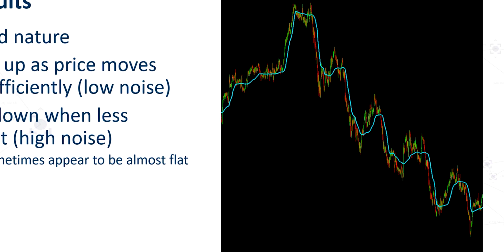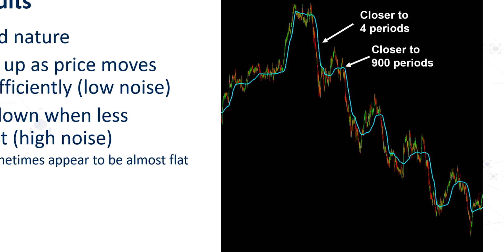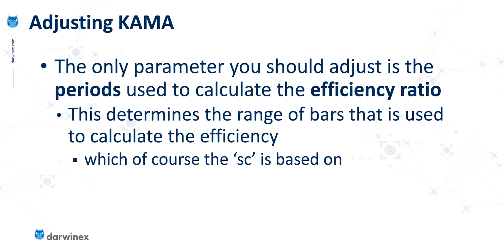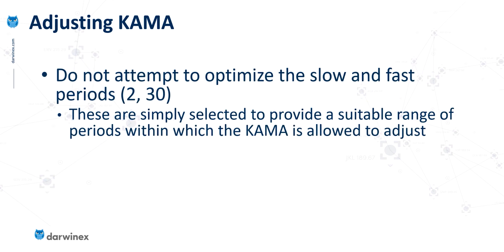At points of efficient price movement, the KAMA will be relatively close to the 4-period end of the spectrum, whereas when it goes flat, it's closer to the 900-period end. The only parameter worth adjusting is the number of periods used to calculate the efficiency ratio — this is what the smoothing constant is based on. A small number of periods makes it very reactive to current noise conditions, whereas a higher number of periods looks over a larger number of bars to perform that noise calculation. What I wouldn't recommend is optimising or changing the periods used for the fast and slow boundaries.